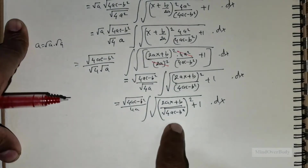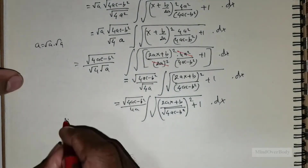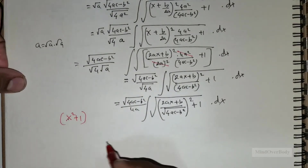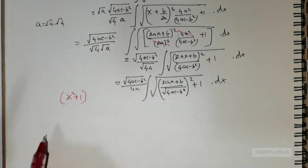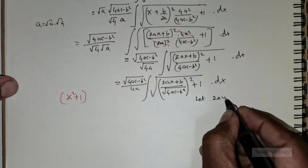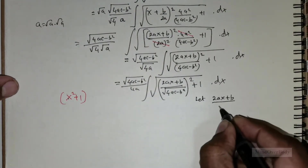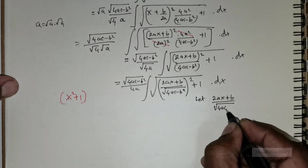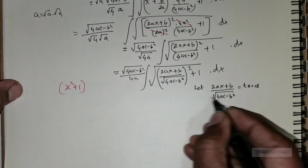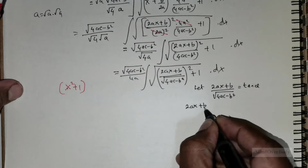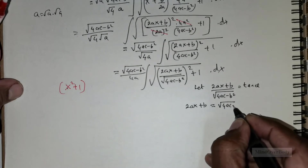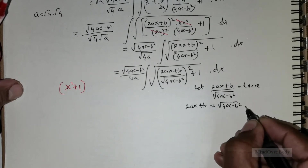Now why do I do this? I want to use the concept of substitution for the form x² + 1. We know that whenever we have x² + 1, we substitute x as tan θ. So let me substitute (2ax + b) / √(4ac − b²) as tan θ. This means 2ax + b equals √(4ac − b²) times tan θ.